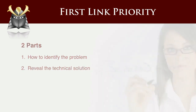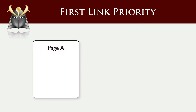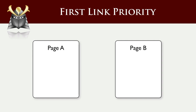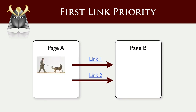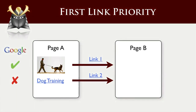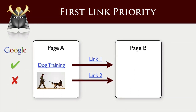The problem is essentially this: here you'll see we've got two pages, page A and page B. Page A links to page B twice. The first link is a graphic and the second link is a text link with nice keyword-rich anchor text. The problem is that Google acknowledges the existence of the first link, but when it finds a second link to the same page, it ignores that link. So the credit that would come from the anchor text having our specific keyword in it is lost. The critical issue is that the first link in the page is what matters the most.